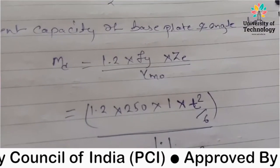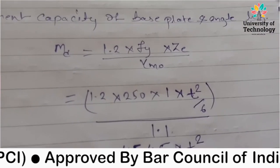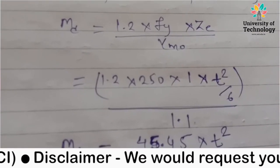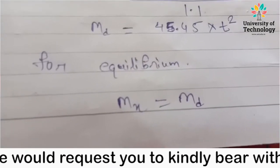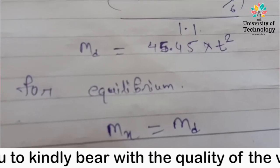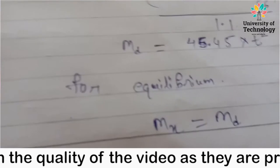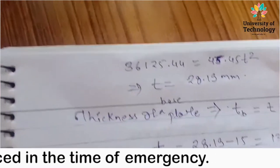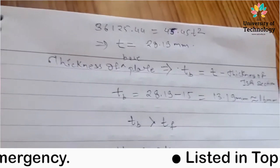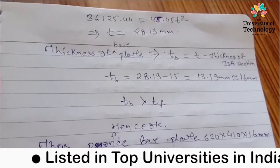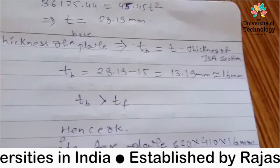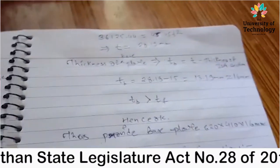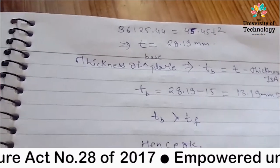Now let's take the formula 1.2 into F05 into ZE upon gamma M0. 1.2, F05 is 250, ZE value is 1 into T2 upon 6 upon 1.1. This value is only T2 in the form, because T is the thickness of the value. Now let's take the equilibrium condition. This is the code we have given. If we have all the conditions in the form, we can make it. So we have to calculate T2. Now the thickness of base plate is equal to T2.